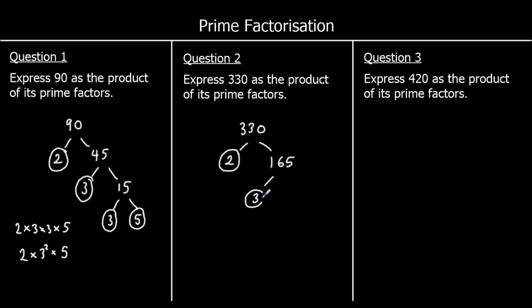And it's 3 times 55. And 55 is in the 5 times table, 5 times 11. So 330 is 2 times 3 times 5 times 11.